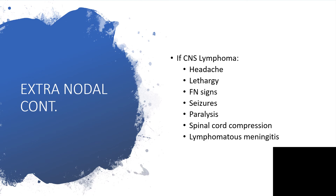If the extranodal part is the central nervous system — giving us CNS lymphoma — the affected individual could present with headache, lethargy, cranial nerve signs, paralysis, seizures, paralysis of cranial nerves, spinal cord compression when it is along the vertebra, and lymphomatous meningitis. In this case, a lumbar puncture and CSF analysis would be performed.